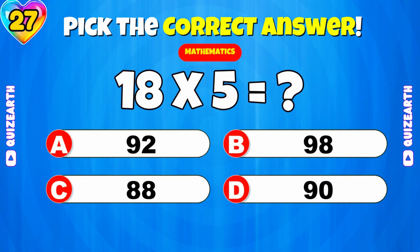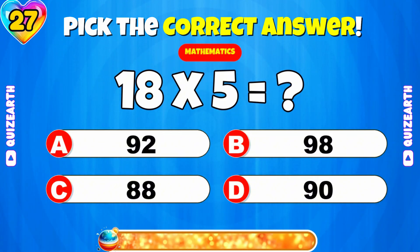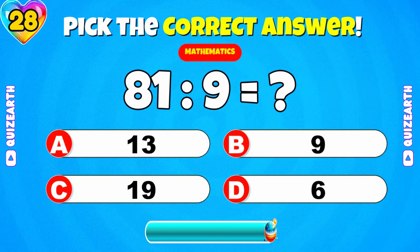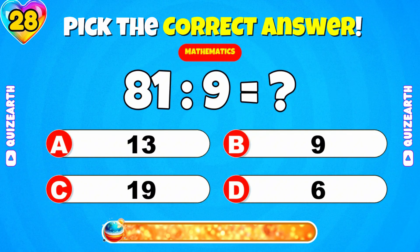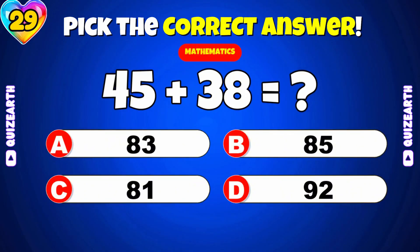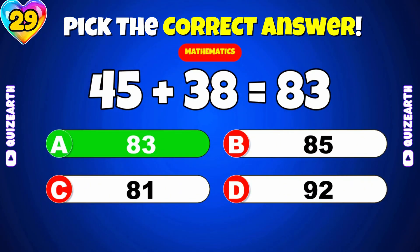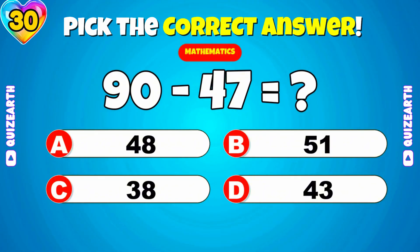What is 18 times 5? 90. What is 81 divided by 9? 9. What is 45 plus 38? 83. What is 90 minus 47? Excellent, 43.